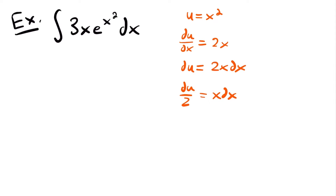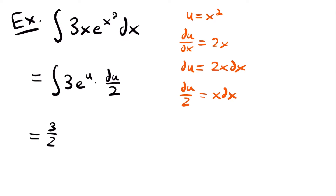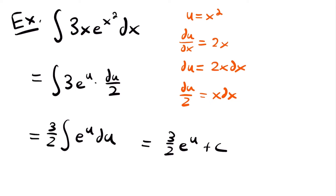Rewriting the integral in terms of u: the integral of 3 times e to the power of u times du divided by 2. We replaced x squared with u and x dx with du divided by 2. Pulling the 3 and the one-half out gives 3 halves times the integral of e to the power of u du. Using our rule, this equals 3 halves times e to the power of u plus c. Replacing u with x squared gives our final answer: 3 halves times e to the power of x squared plus c.